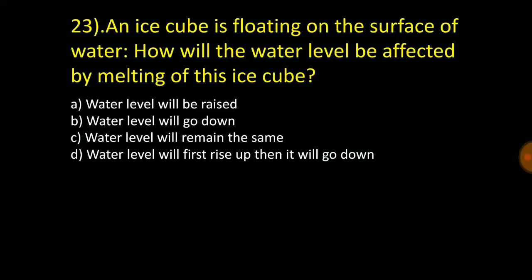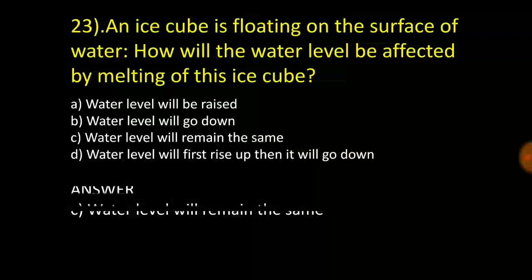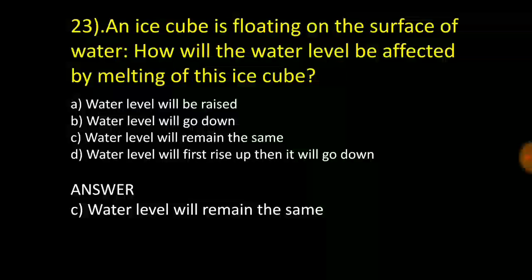An ice cube is floating on a surface of water. How will the water level be affected by melting this ice cube? Water level will rise, water level will go down, water level will remain same, or water level will first rise and then go down. And the answer is water level will remain same.